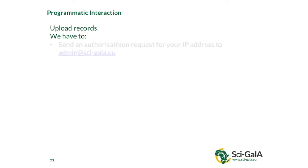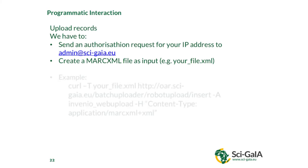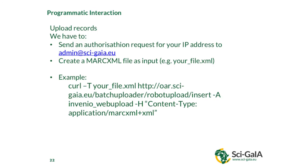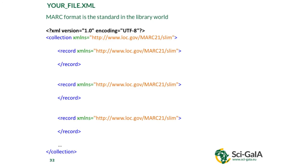If you want to upload one or more records, you have to send an authorization request for your IP address to the administrator and create a MARC XML file as input. This file is important because it contains all the records you want to upload. Once you create the file and your IP is authorized, you can use this query to upload the file. The administrator then accepts the request. If you want to know more about the upload process, you can visit this guide.